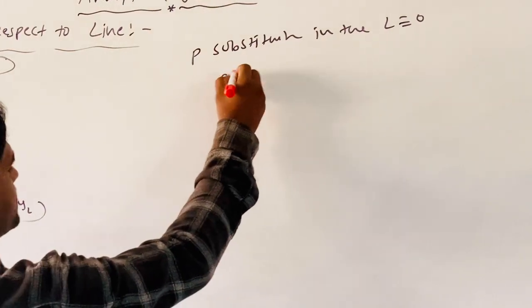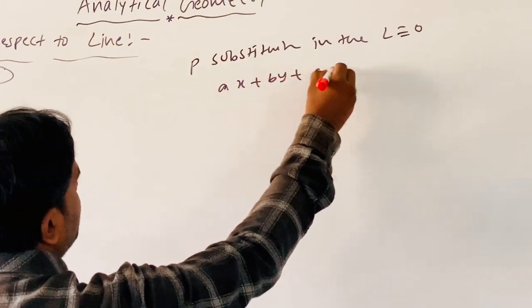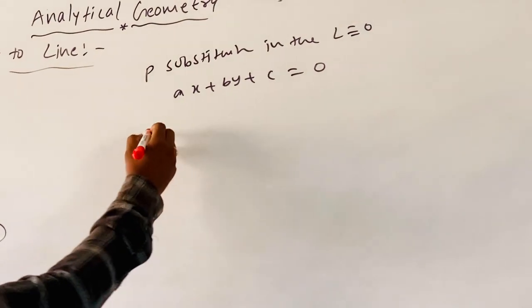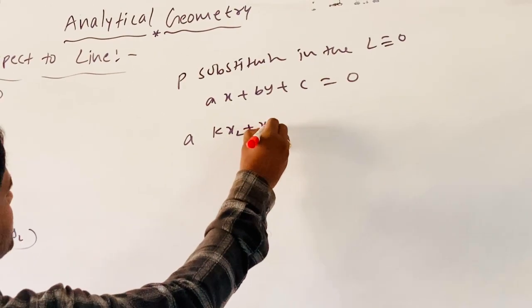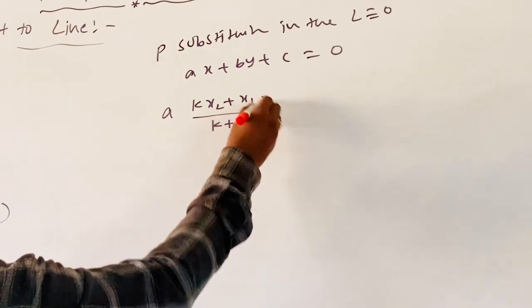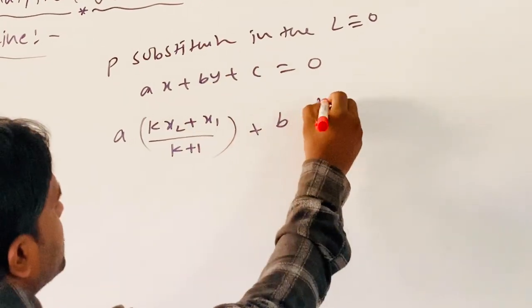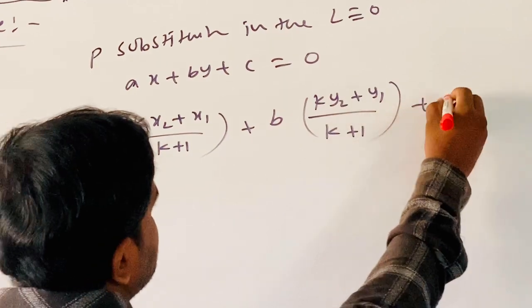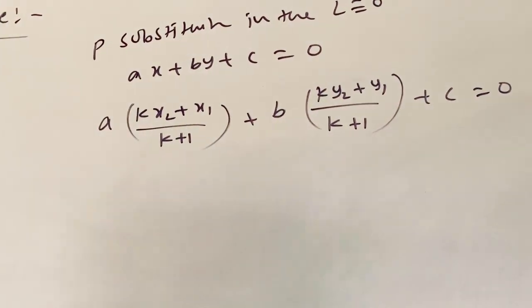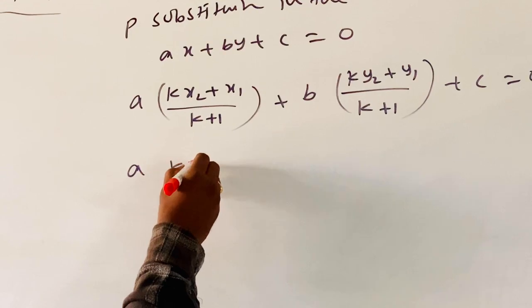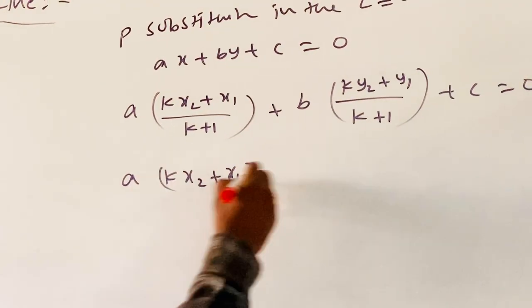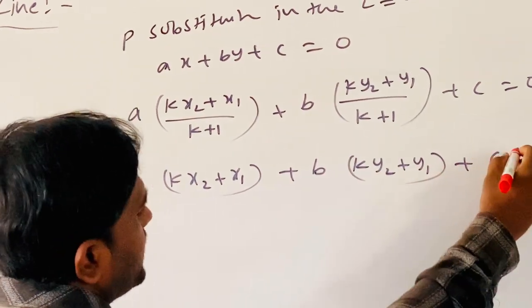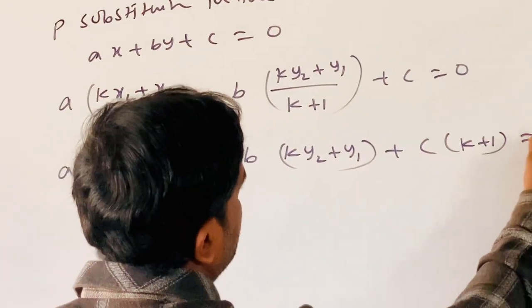Substituting P in L: A times (KX2 plus X1)/(K plus 1) plus B times (KY2 plus Y1)/(K plus 1) plus C equals 0. Taking K plus 1 as LCM, we get A(KX2 plus X1) plus B(KY2 plus Y1) plus C(K plus 1) equals 0.